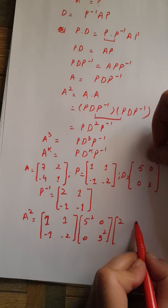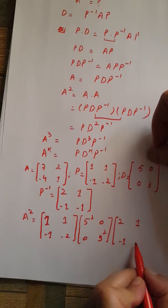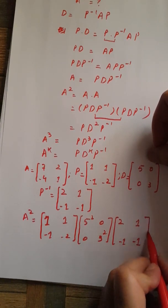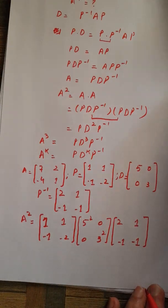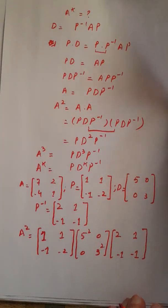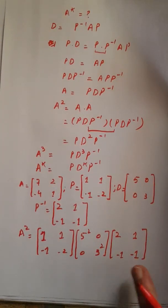Finally, P inverse is [2, 1; -1, -1]. If you simplify this expression, you can compute A squared.